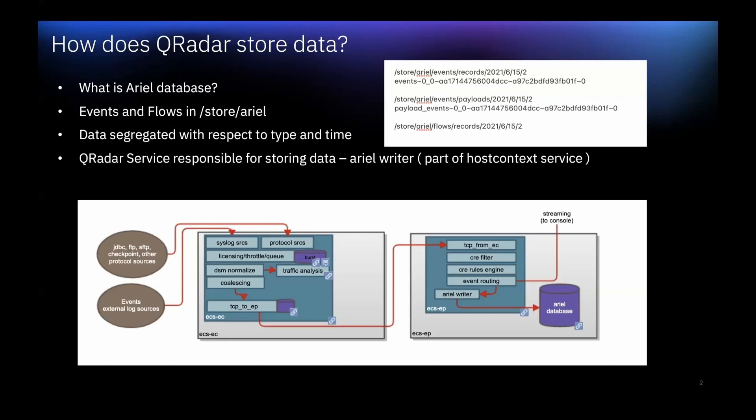Event coalescing helps improve performance and reduce storage impact. When a large burst of events is received that matches specific criteria — for example, the multitude of similar events that can be created during a denial of service attack — these could be converted from hundreds of thousands of events into a few dozen records, while maintaining the count of the number of actual events received. Once this is done, events are sent to the Event Processor for further processing.